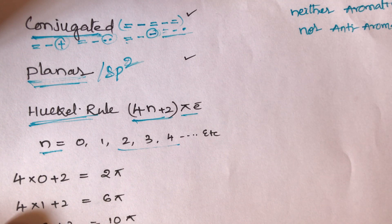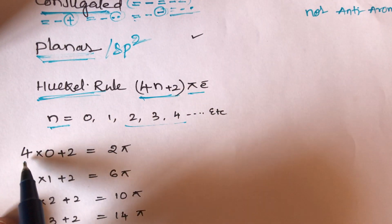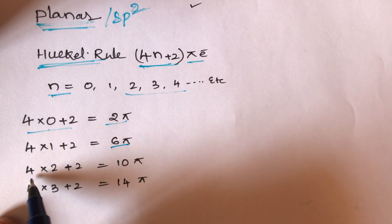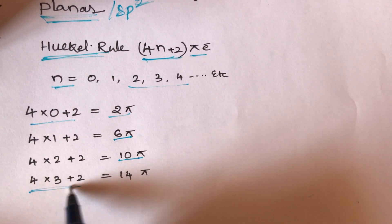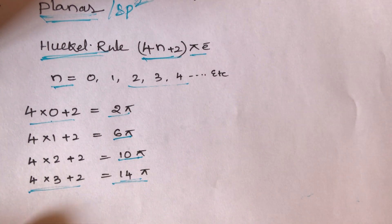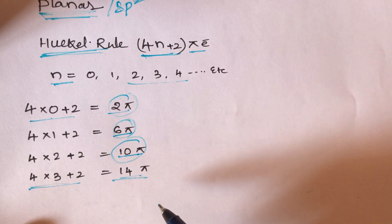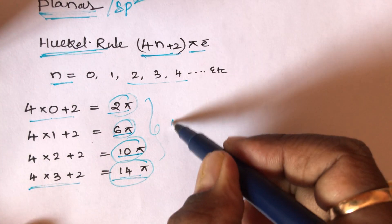If n = 0: 4(0) + 2 = 2 pi electrons. If n = 1: 6 pi electrons. If n = 2: 4(2) + 2 = 10 pi electrons. If n = 3: 14 pi electrons. So aromatic compounds contain 2, 6, 10, or 14 pi electrons — these are always aromatic.